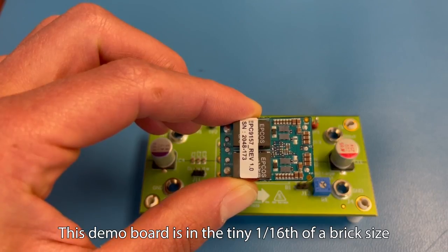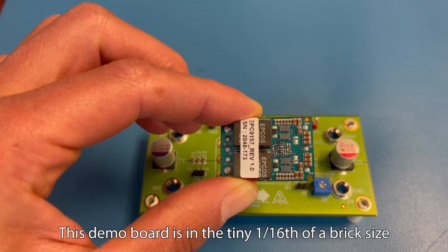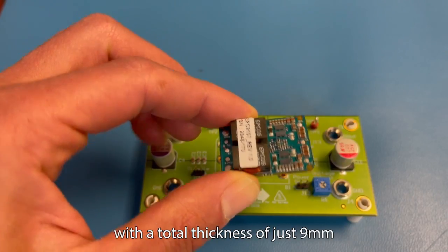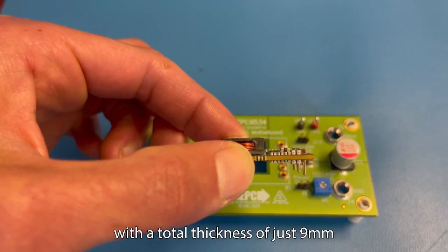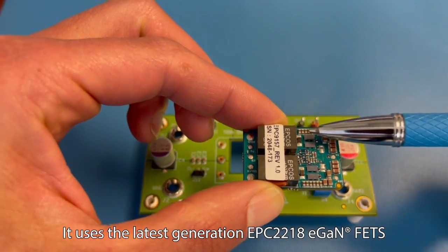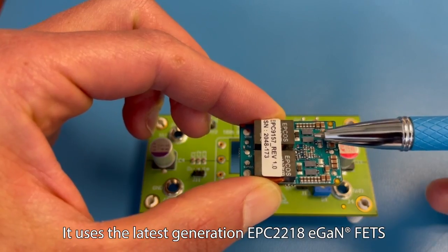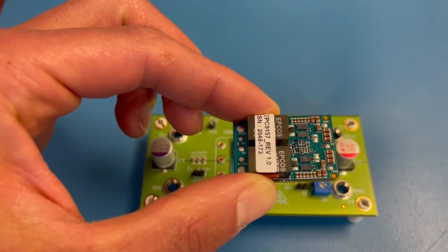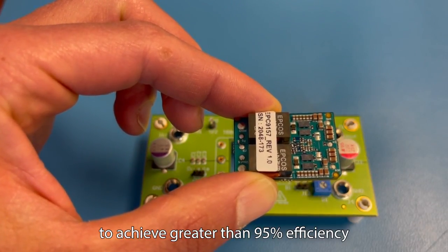This demo board is in the tiny 1/16th of a brick size with a total thickness of just 9 millimeters. It uses the latest generation EPC2218 eGaN FETs to achieve greater than 95% efficiency.